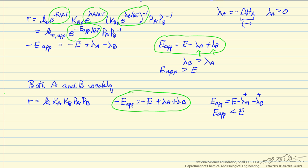Physically, as temperature increases, the rate constant for the reaction increases, but the coverages of A and B decrease. Depending on the relative values, this determines how the reaction rate depends on temperature. There is a competition: decreasing coverage causes the rate to decrease, while increasing rate constant causes the rate to increase. Indeed, it is possible that as we raise the temperature, the rate goes through a maximum, because the coverage decrease could dominate — meaning these terms could be large enough to make the apparent activation energy negative.